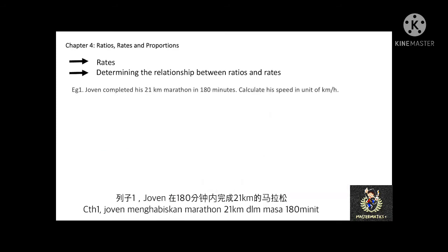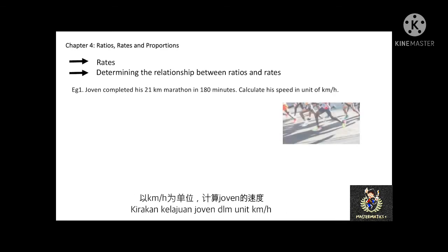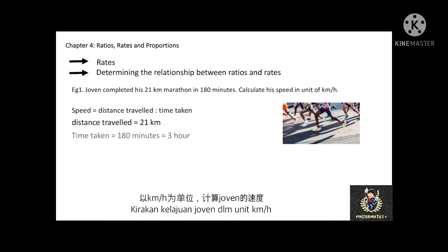Example 1: Jovan completed his 21-kilometer marathon in 180 minutes. Calculate his speed in km per hour. The ratio of speed is distance traveled to time taken. The distance is 21 km. The time is 180 minutes, which converts to 3 hours by dividing by 60. Therefore, the speed is 21 km divided by 3 hours, which equals 7 kilometers per hour.